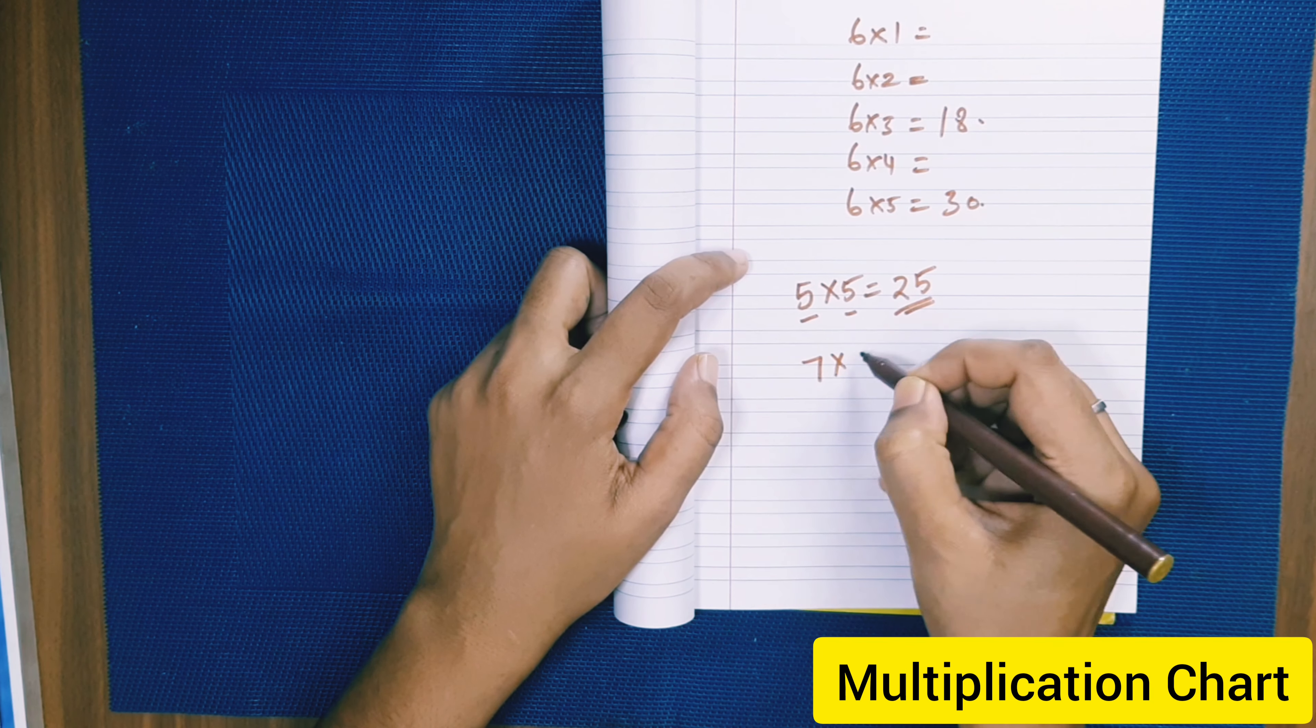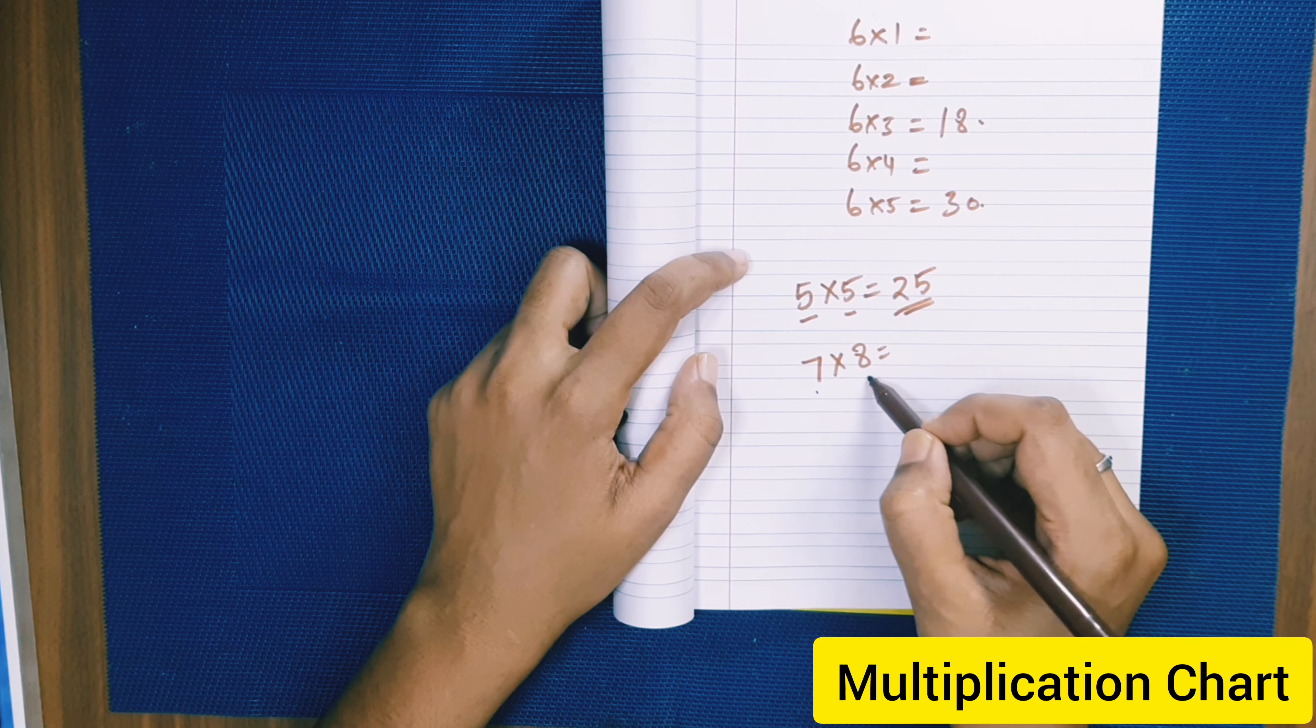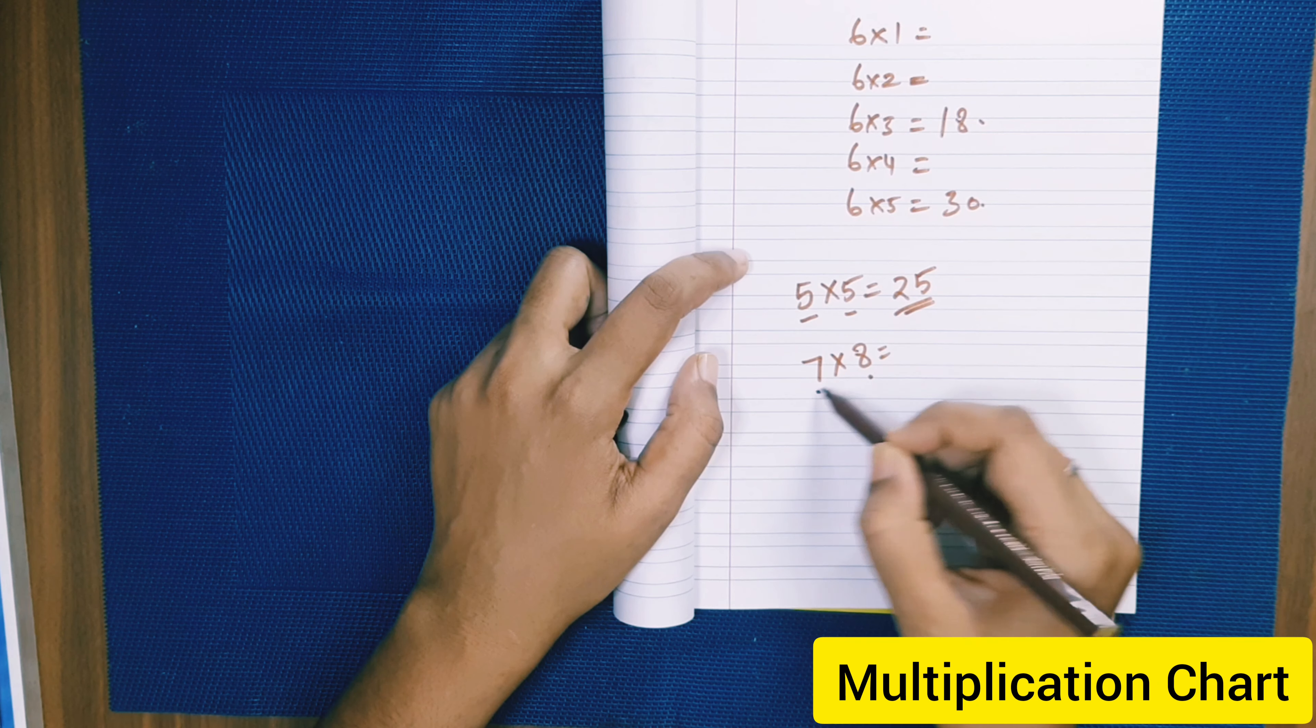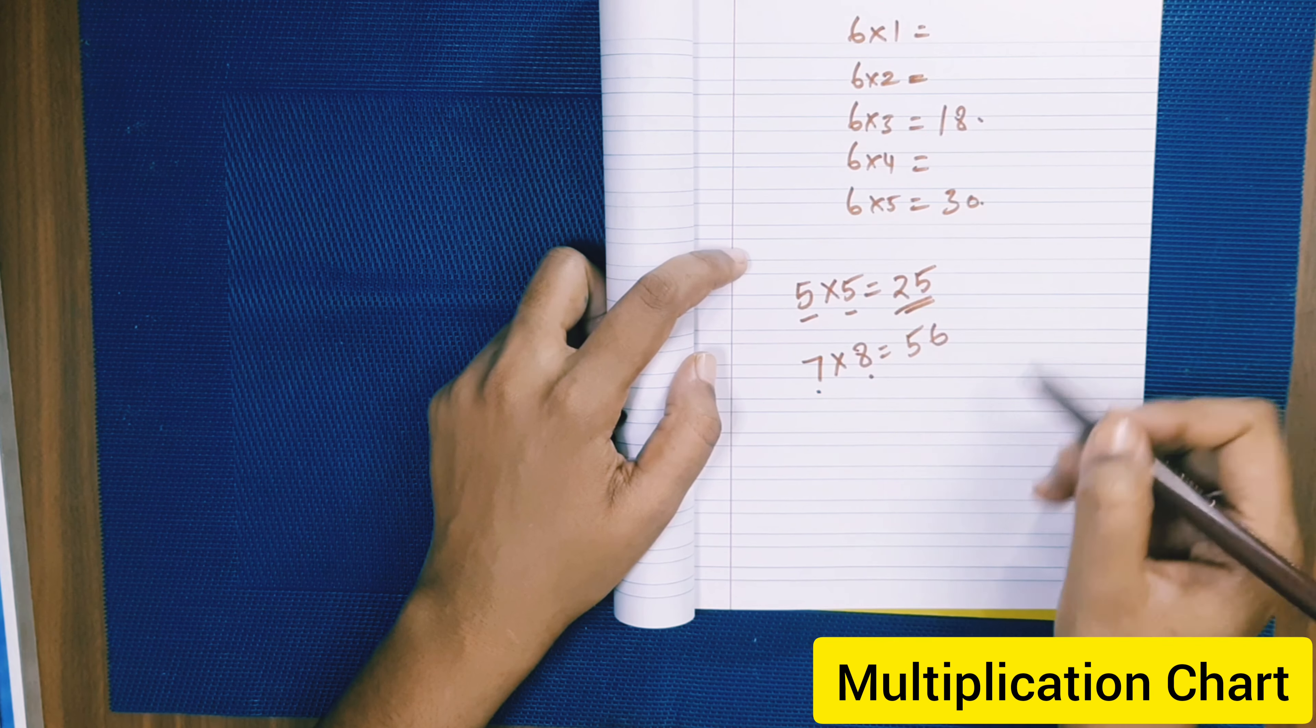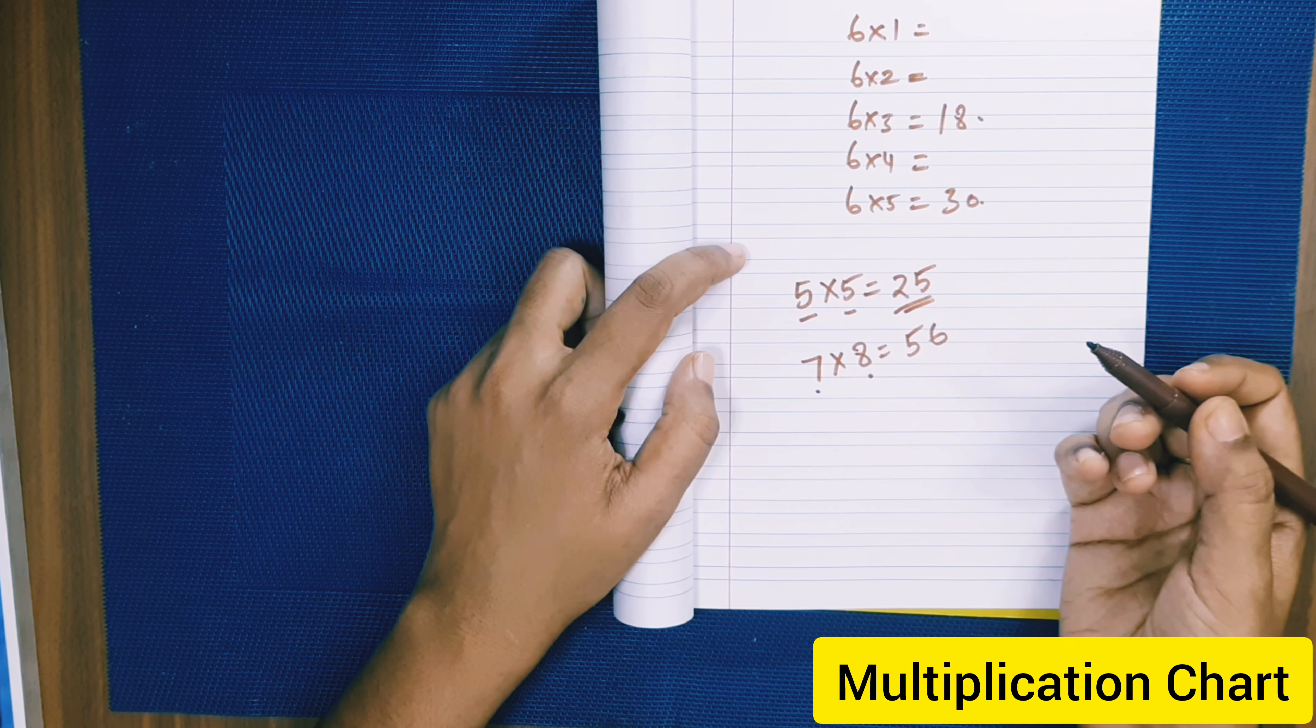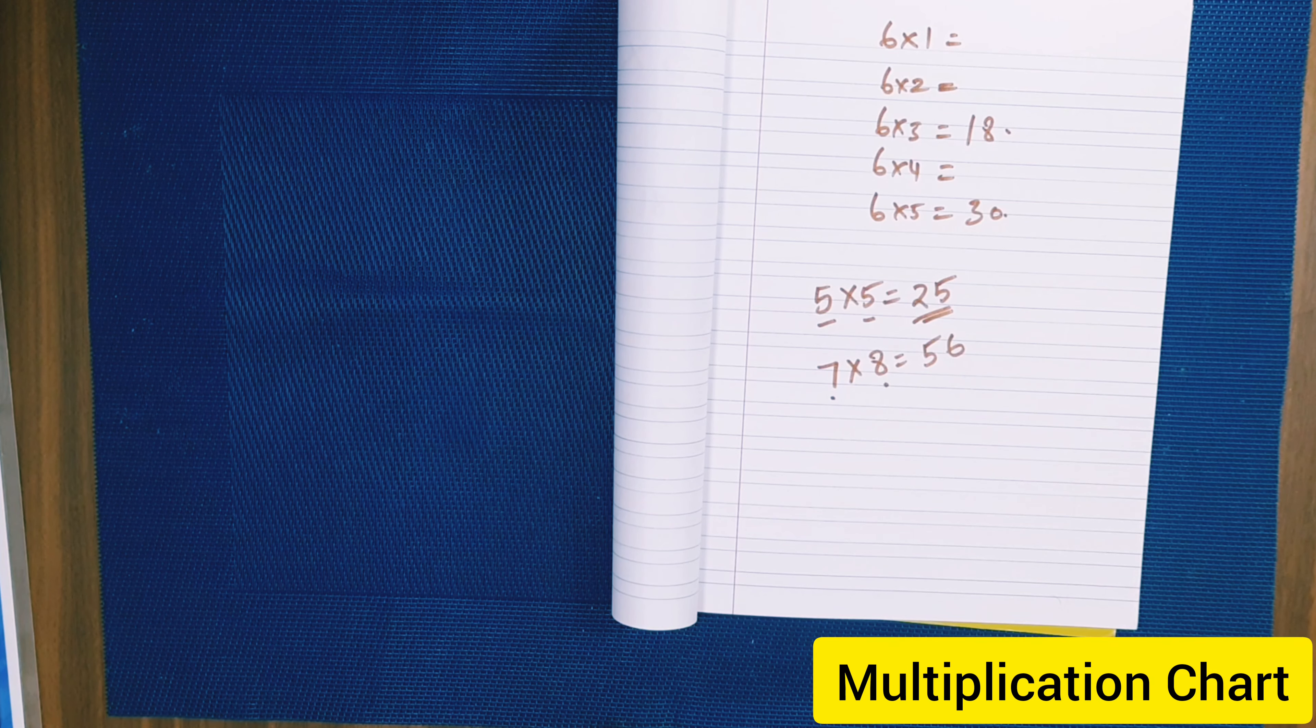And then 7 multiplied by 8. So tell the child that after 7 it's 8. Ask the child what comes before 7. 6. Before 6 it's 5. If you give like this, then over period of time it will become easy.